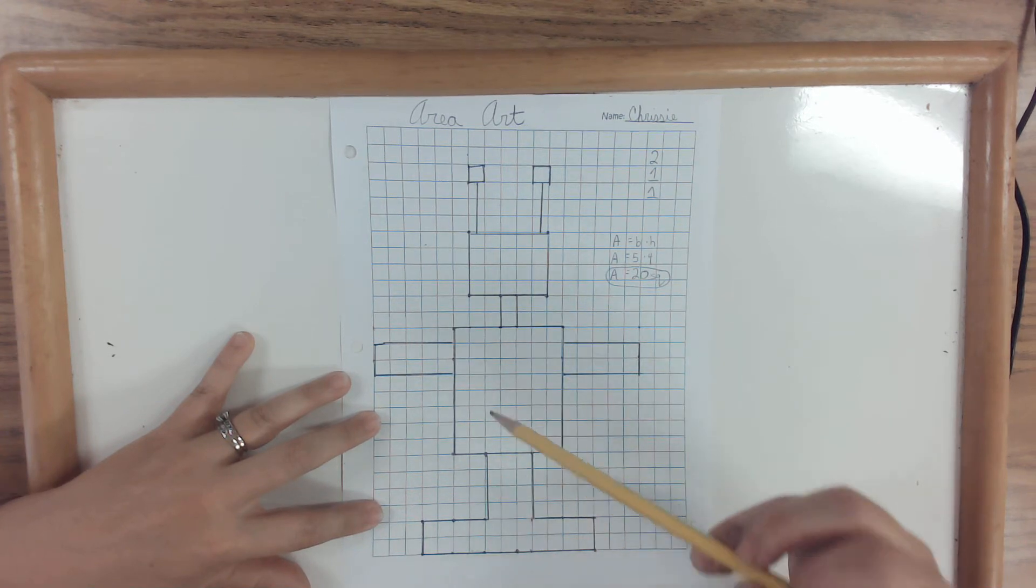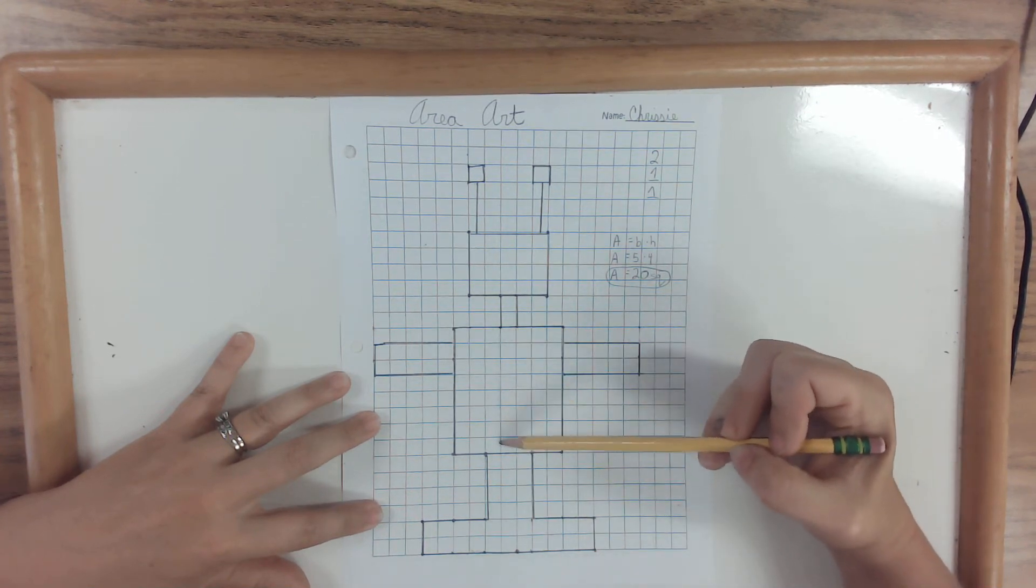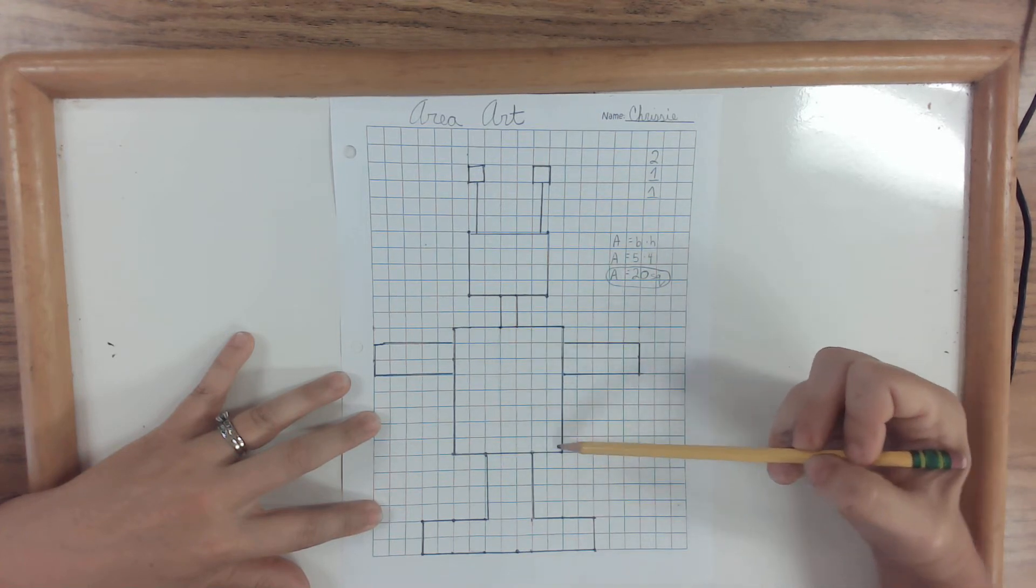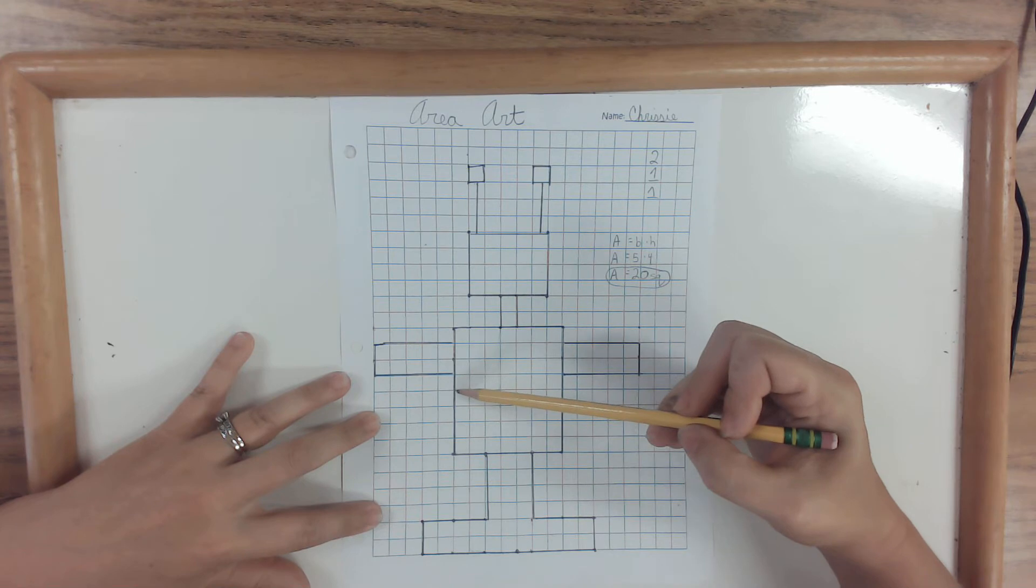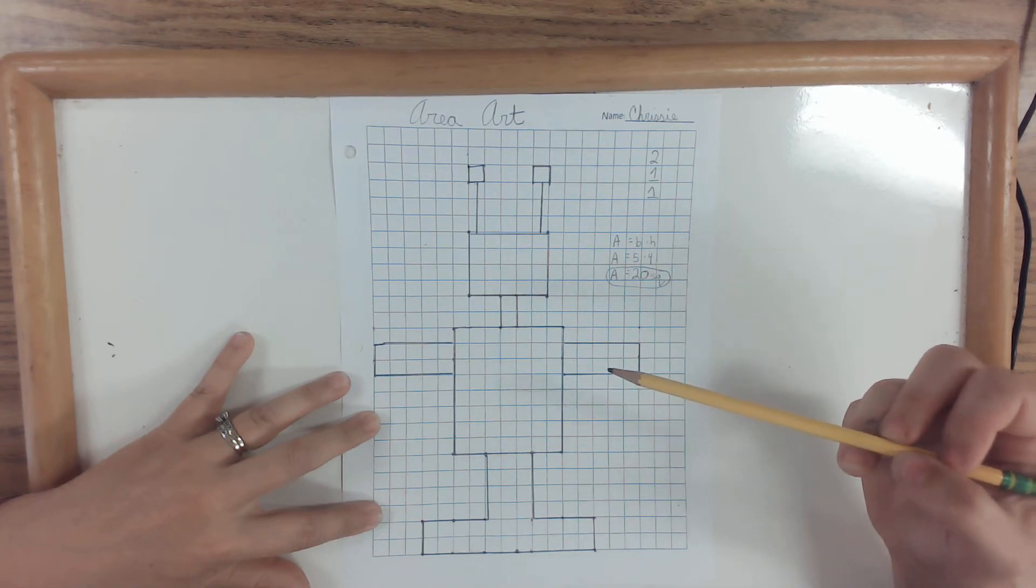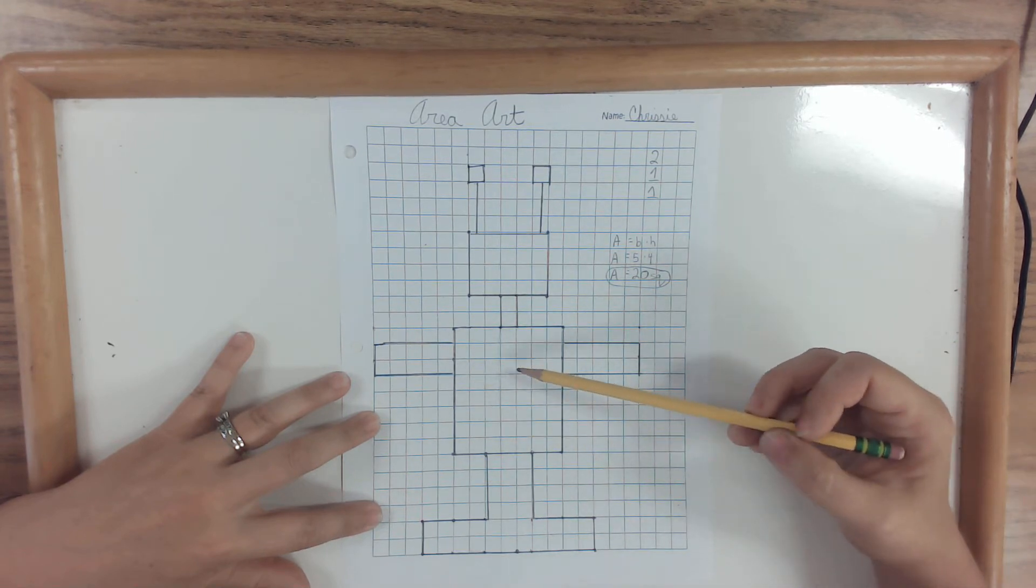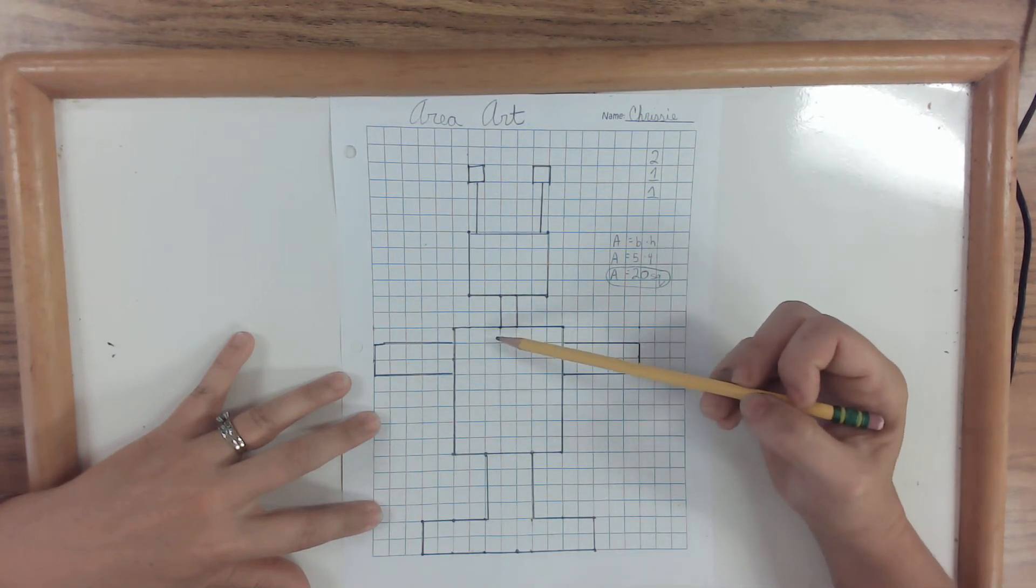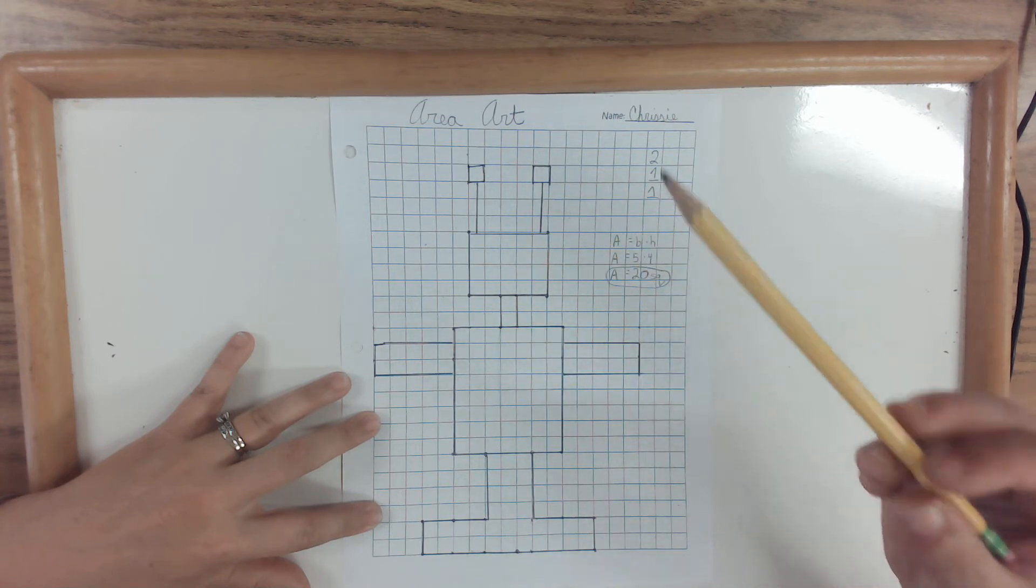But if you find that the math is too hard, well, couldn't I just do this area? And then I could do this area over here. I could divide it into even smaller areas and do smaller math. If I'm really struggling, I could just count the squares. And if I wanted to count all of these, that would still be okay.